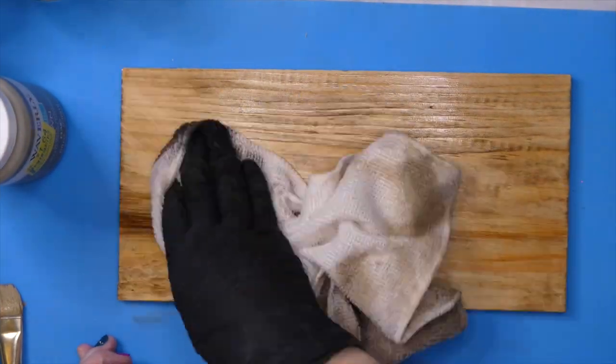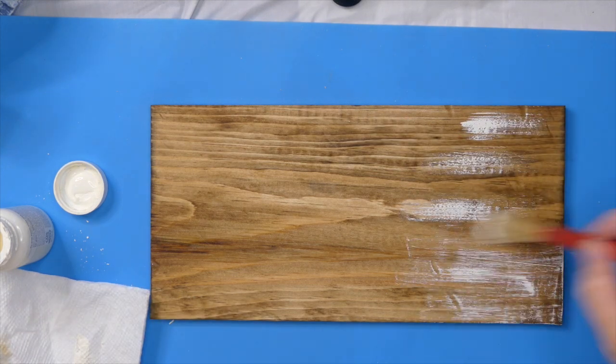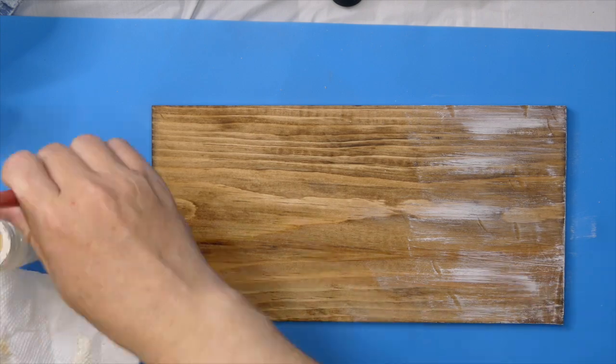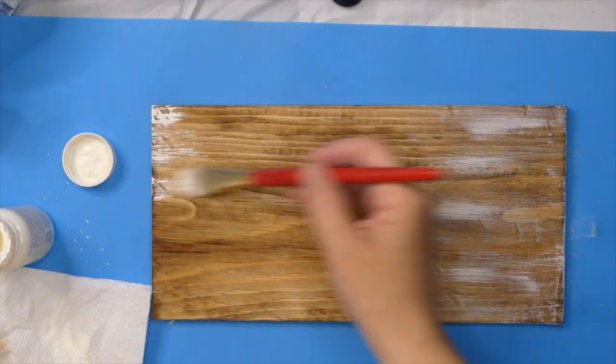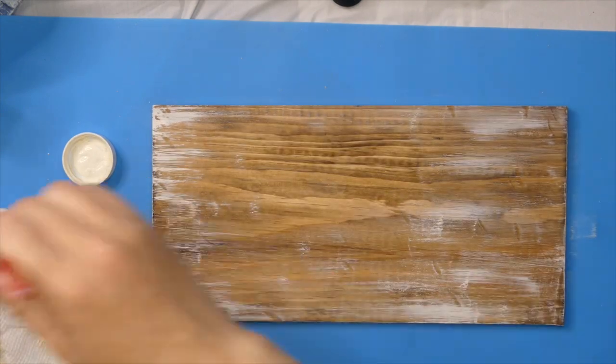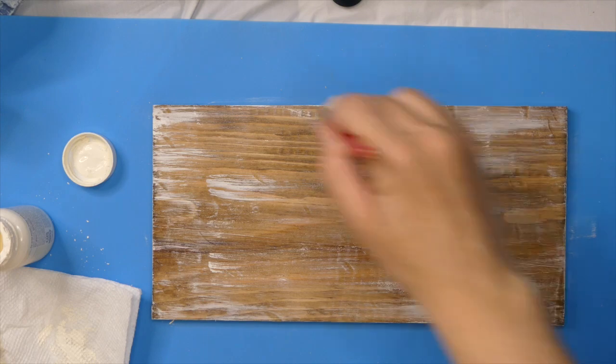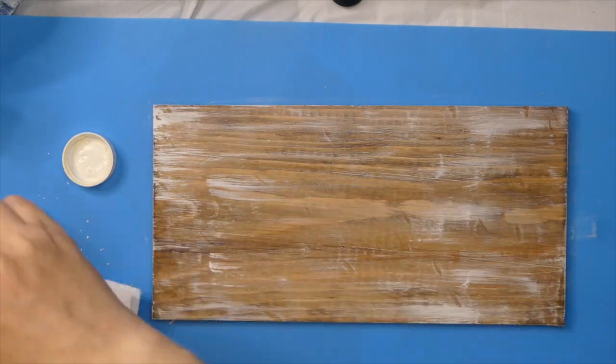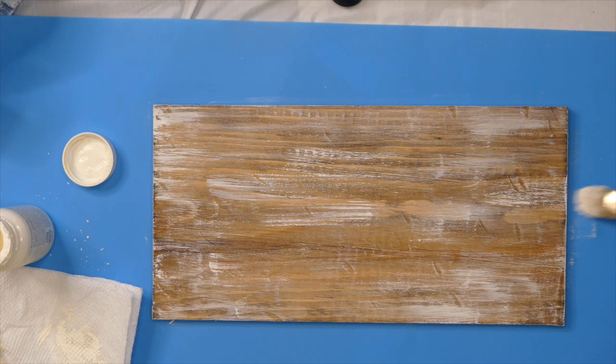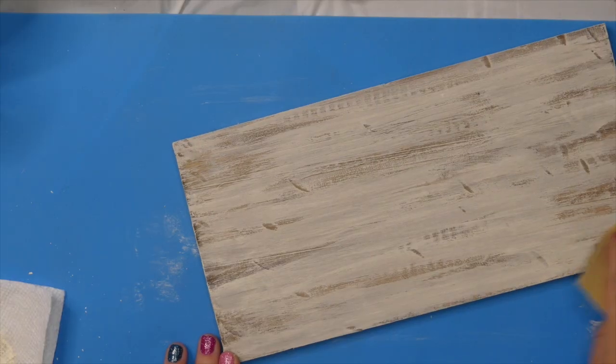I also got this wood plank from Dollar Tree—I could not believe I saw these planks there. I stained it with Early American, and once dry, I'm dry brushing again to give it that salty air look. I'm using ivory Waverly chalk paint, going heavier on it so I can sand it down.